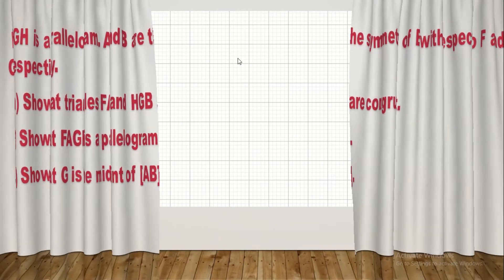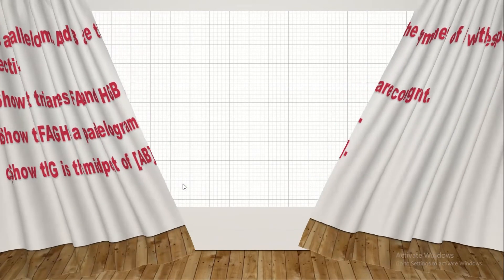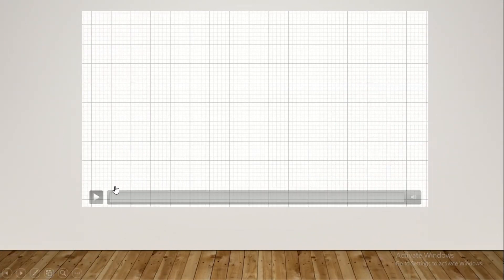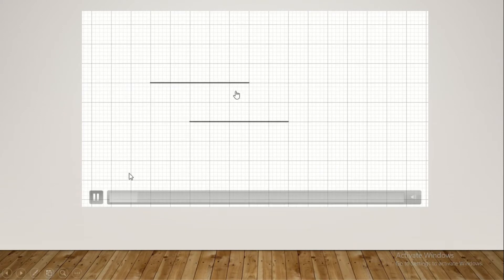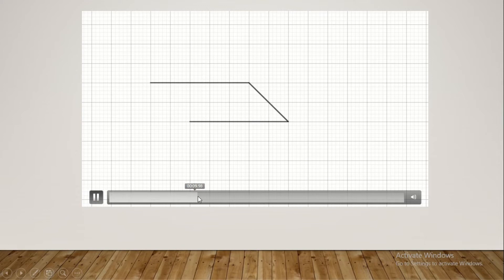How to construct a parallelogram? First of all, in order to draw a parallelogram we should draw two lines that are equal and parallel to each other, but one of them should be deviated from the other. Now when we join them we get a parallelogram. We have this parallelogram EFGH.